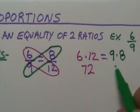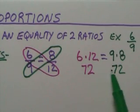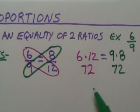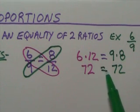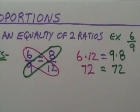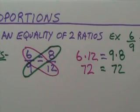72. And 9 times 8 is 72. And you can see that this is true. The left side equals the right side. Therefore, this is a proportion. Because cross products are equal to each other. And this is what, this is called cross products.